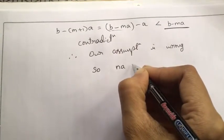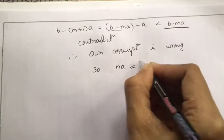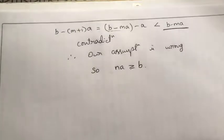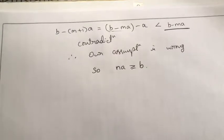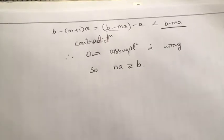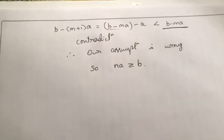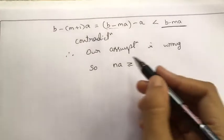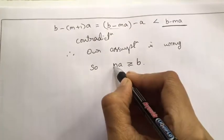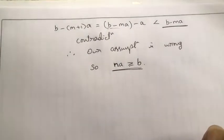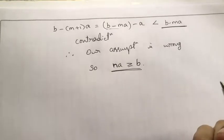We assumed n·a is less than b, so that is wrong. Therefore n·a must be greater than or equal to b. That is the Archimedean property: if a and b are any two positive integers, then there exists a positive integer n such that n·a is greater than or equal to b.